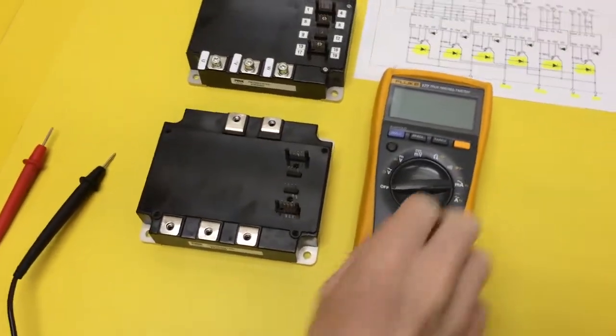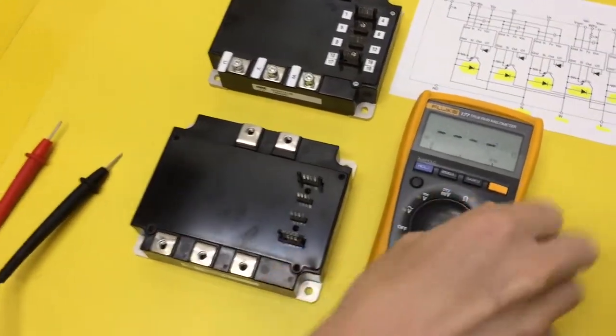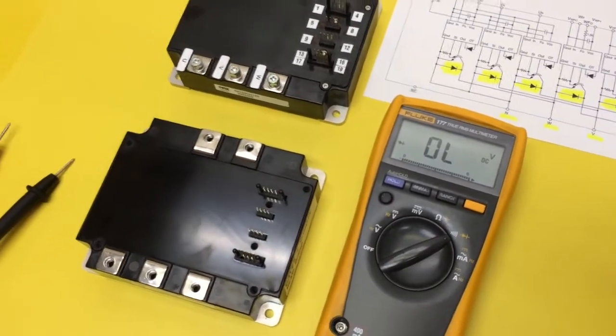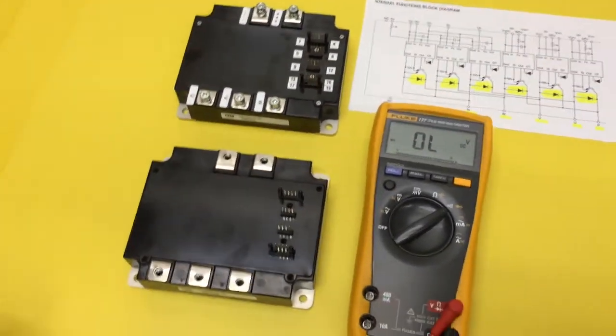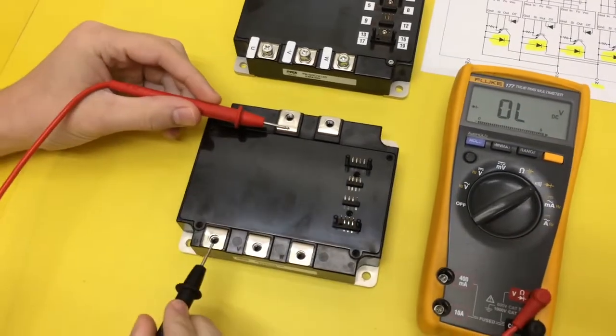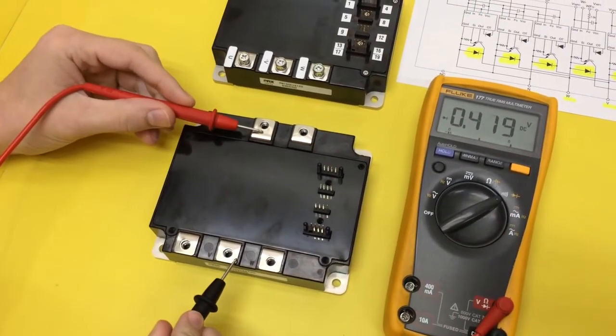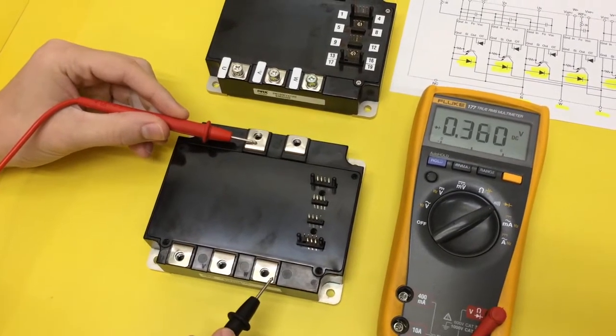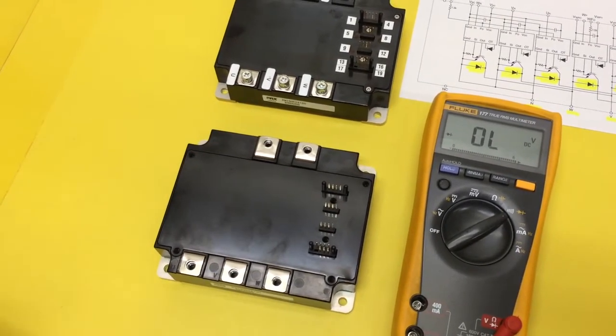Ryan, go ahead and put the meter on diode test scale. Alright, we're on diode test. He's just going to put his red lead on negative and then check all three phases. At this point, if one reads different, it's the culprit. Those all read good.